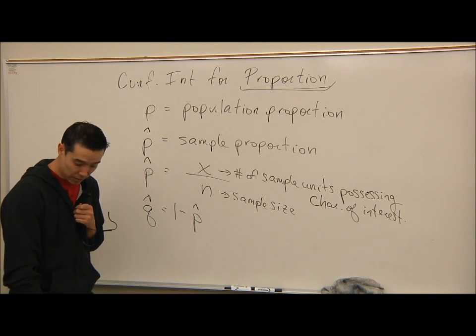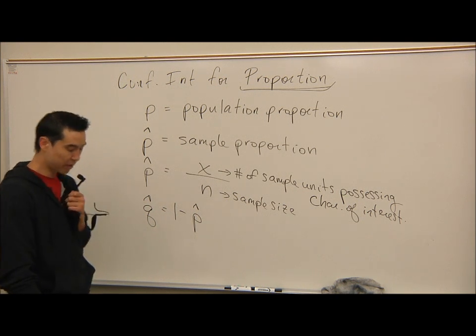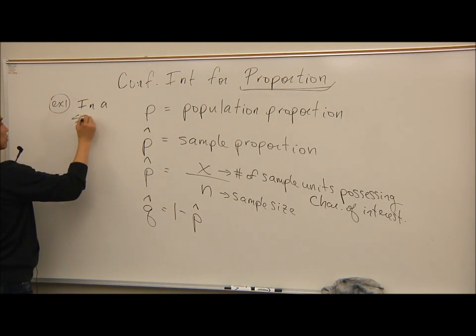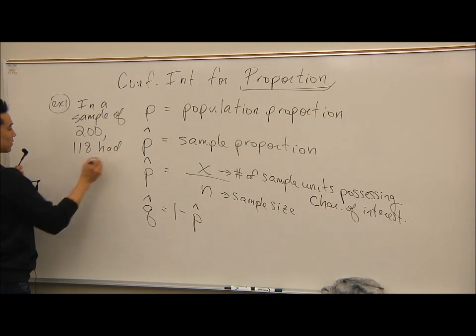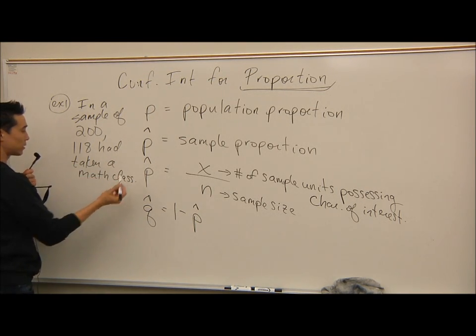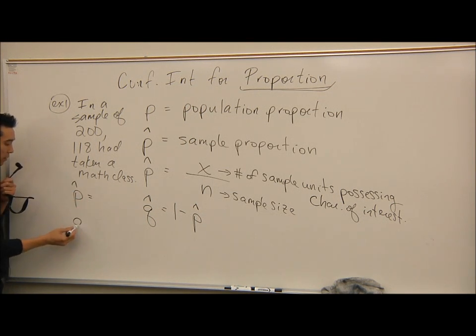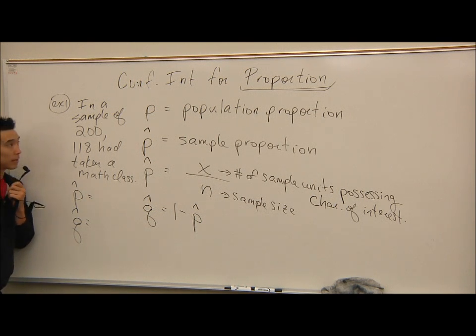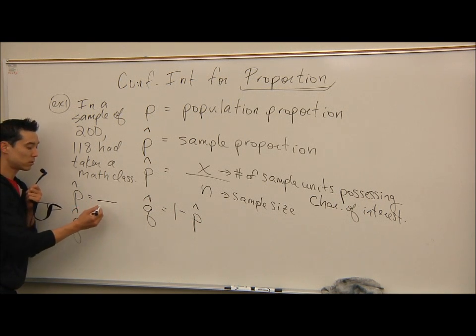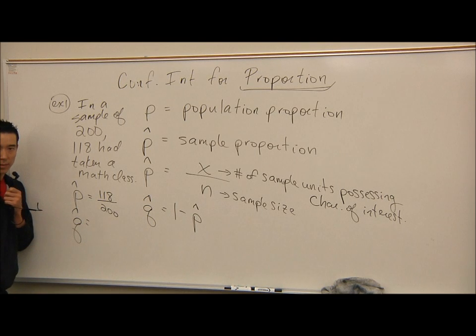In a sample of 200 students, 118 of them had taken a math class. So example one: we have a sample of 200 students, 118 had taken a math class. All they want to know is what's P hat and what's Q hat for this problem. The characteristic of interest is students that took a math class. There's 200 total, that's the bottom number, and 118 took a math class.